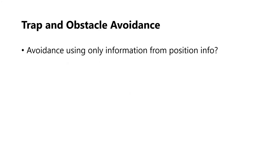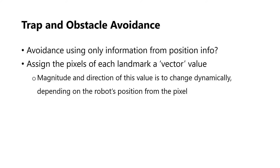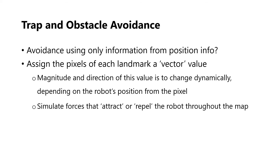Moving on to trap and obstacle avoidance — how can we achieve this using only position information? We assign the pixels of each landmark a vector value. The magnitude and direction of this value change dynamically depending on the robot's position from the pixel. Collectively, these values simulate forces that attract or repel the robot throughout the map.